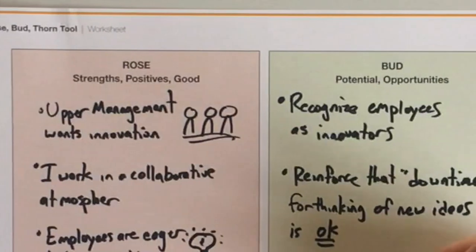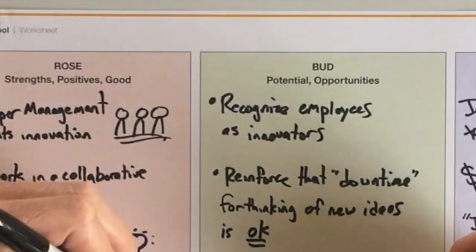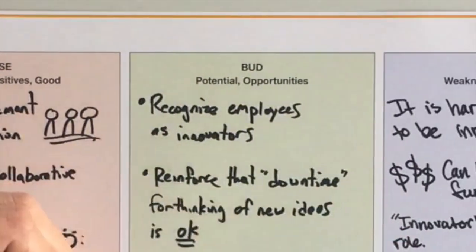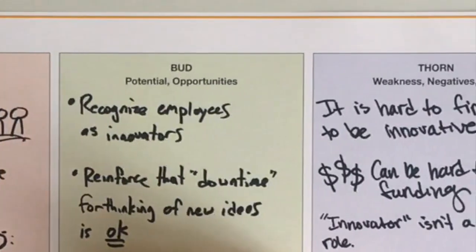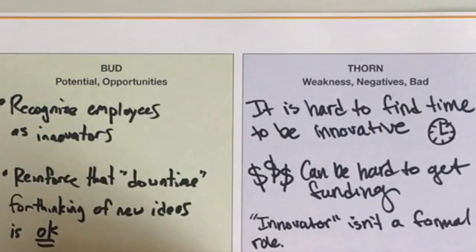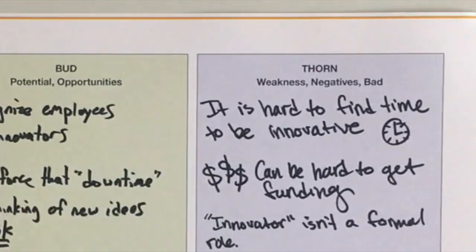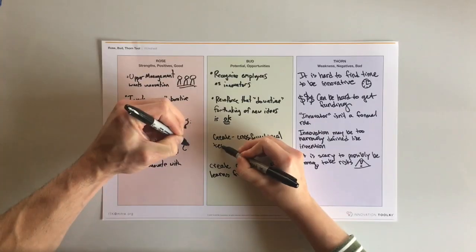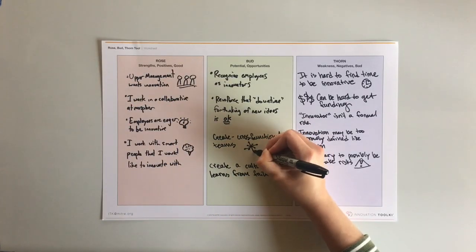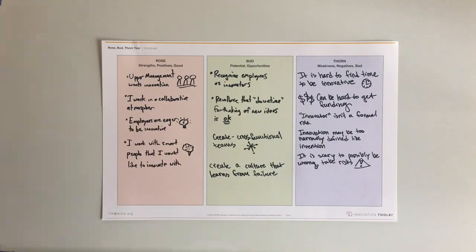Positives, strengths, or good things go in the Rose column. Opportunities and things with potential go in the Bud column. And weaknesses, negatives, or bad things go in the Thorn column. By the end, you have a visually categorized analysis that can help your team make informed value judgments.